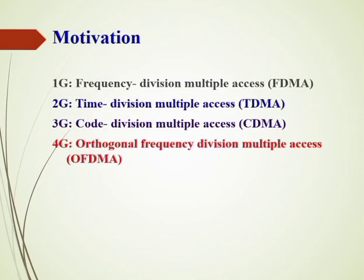In the first generation of mobile communication we were using frequency division multiple access, that is FDMA. In the second generation we were using time division multiple access, that is TDMA. In the third generation we were using code division multiple access, that is CDMA. In the fourth generation we were using orthogonal frequency division multiple access, that is OFDMA. And in the fifth generation, the most promising candidate is NOMA — non-orthogonal multiple access.